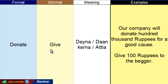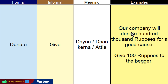Doostoon, word donate aur give. Dono ka meaning hoota hai dayna. Lekin donate ka jo asal meaning hai wo formal environment mein use hoga, aur give ko hum informal environment mein use karenge. Example letay hain: 'Our company will donate hundred thousand rupees for a good cause.' Hamaari company achhe cause ke liye ek laakh rupee donate karay gi. Lekin mein kahna chahta hoon ke yaar bhikari ko so rupee day do, toh mein kahoon ga 'Give hundred rupees to the beggar.' Toh hum nay aam bolchaal ke liye donate ka word nahin use kia, balke simply give ka word use kia.